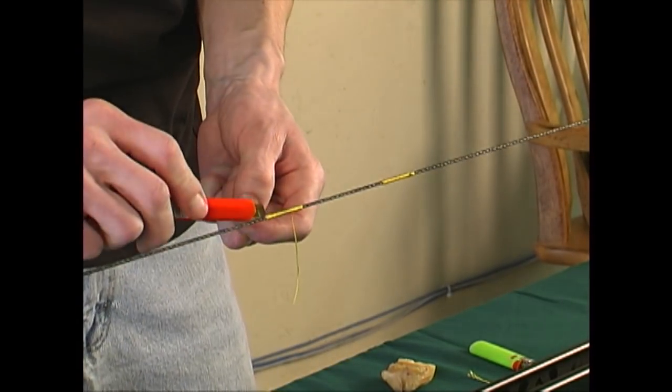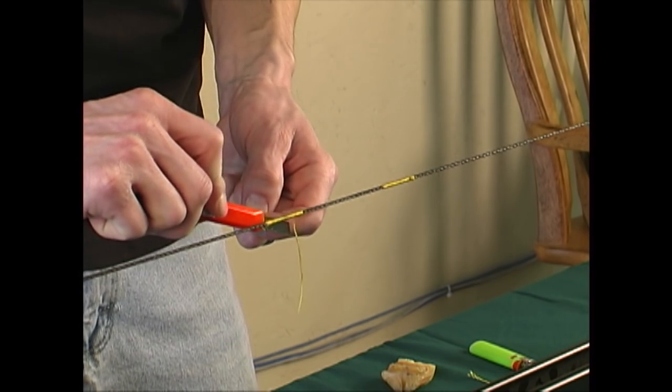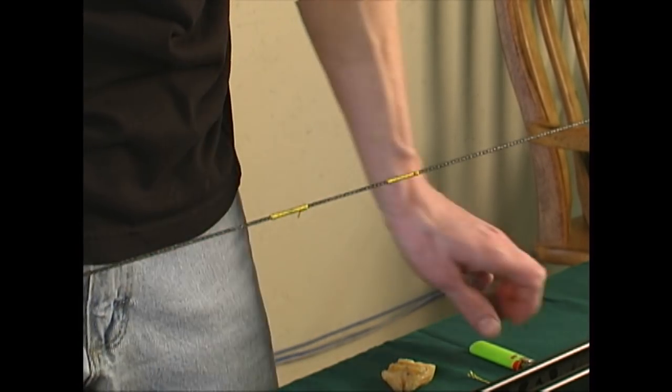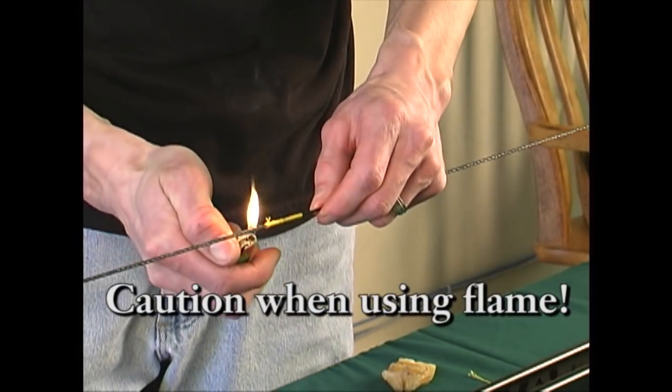Now, using a knife, cut the end of the serving tag off so it's close to the serving. Use a flame to burnish the ends. Once again, be careful.